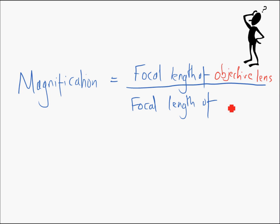There we go. Focal length of the objective lens divided by the focal length of the eye piece. All right, so this is the magnification of your telescope.